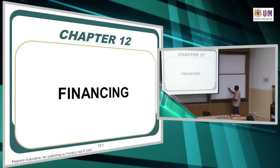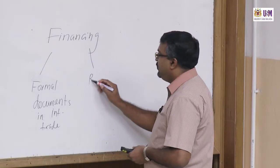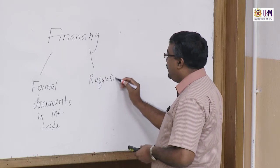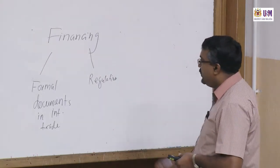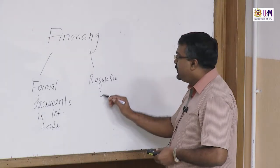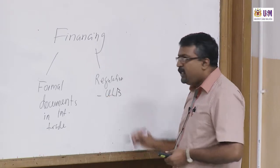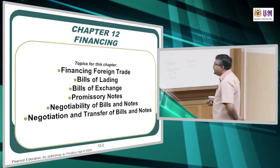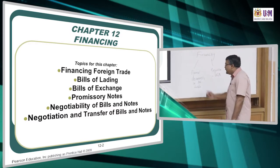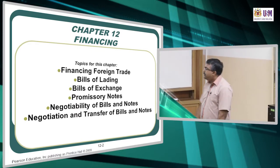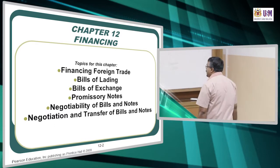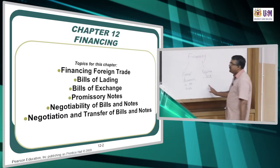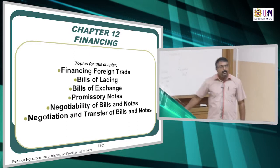In financing foreign trade, we are going to look at what are the formal documents, then what are the regulations. That's important because we are studying international law, international trade law — we look at the regulation. The regulation we will concentrate on is ULB. So we will look at the financing of foreign trade, bills of lading, bills of exchange, promissory notes, and negotiability of the bills and notes. We will also look at the ULB.